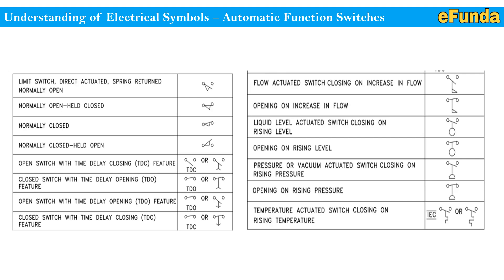Opening on increase in flow — once the flow has increased, the switch will open. Liquid level actuated switch closing on rising of the level, and opening on rising of the level, similar to flow type functionality. Pressure or vacuum actuated switch closing on rising pressure, and opening on rising pressure. Temperature actuated switch closing on rising temperature, similar in function to level and flow switches. These automatic function switches indicate specific actions based on flow, level, pressure, or temperature parameters.